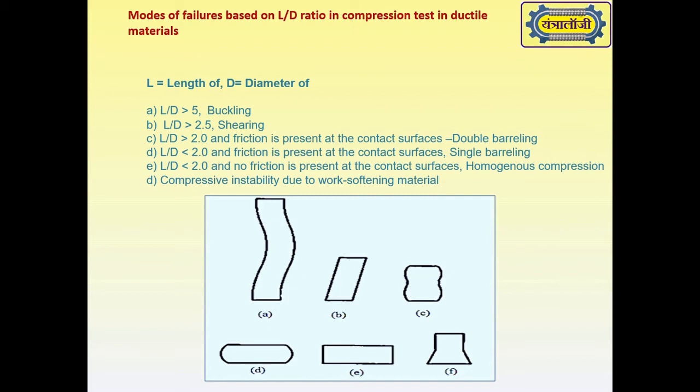If L/D is greater than 2.0 and friction is present at the contact surfaces, there will be double barreling. If L/D is less than 2.0 and friction is present at the contact surfaces, there will be single barreling.